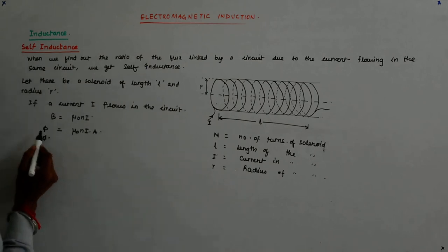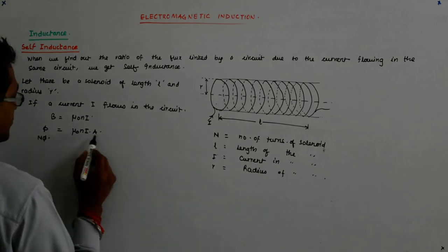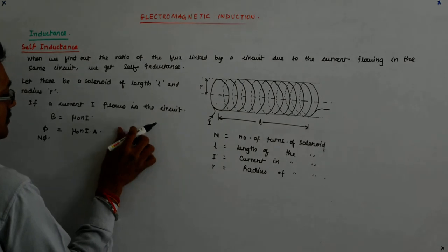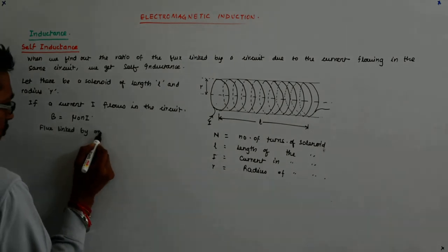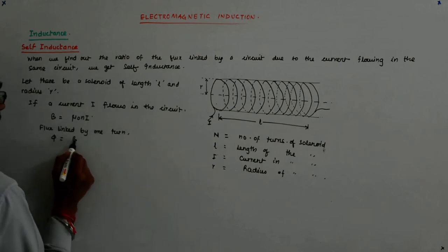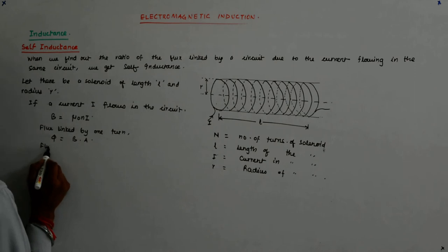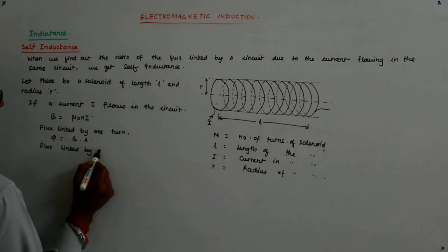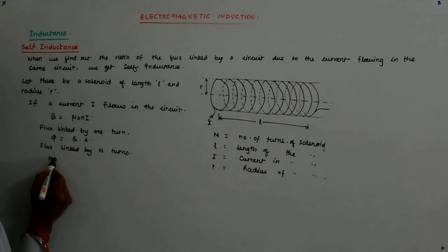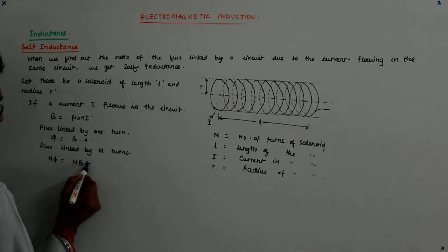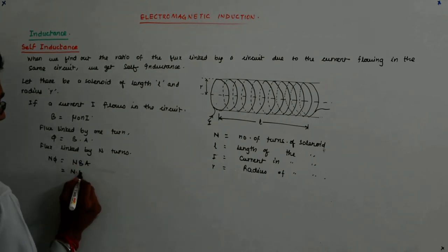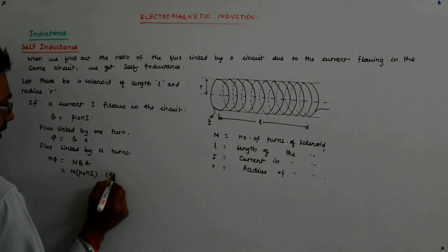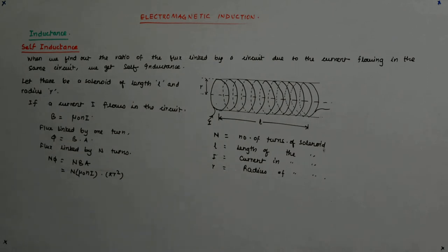So Nφ - this is flux linked by one turn, φ equals B into A. Therefore, flux linked by N turns is Nφ, which equals N into B into A, which is N into B into πR². Obviously, I should have put the value μ₀NI/L, that is B into πR², which is area. That is Nφ, the total flux linked.